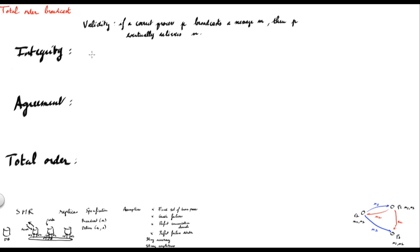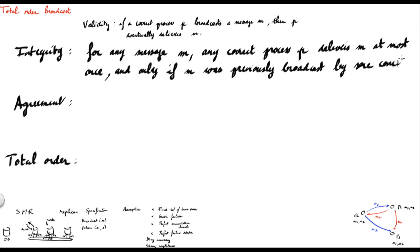The Integrity property states that for any message M, any correct process P delivers M at most once, and only if M was previously broadcast by some correct process Q. The Agreement property states that if a correct process P delivers a message M, then every correct process Q eventually delivers M.